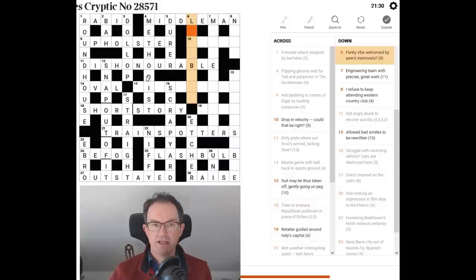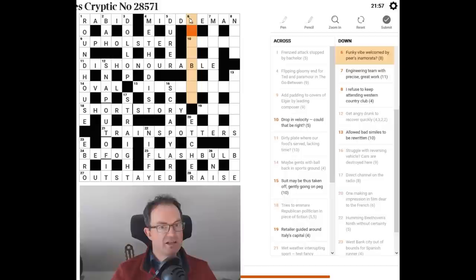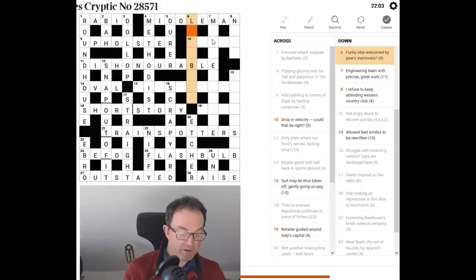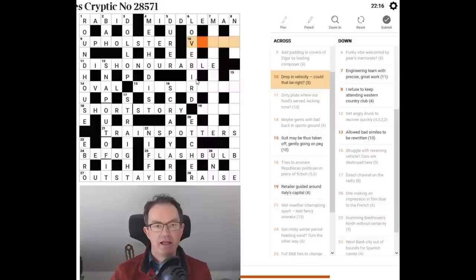Now let's go for this one, so funky vibe welcomed by Pia, Pia's probably a lord, in Amarata, oh lovebird, it is lovebird, okay so funky vibe, funky is telling us do an anagram of the word vibe, and we are welcoming that, so we're including it within a word for a Pia, and a Pia is a lord, a nobleman, so, and the way you get lord very quickly is we know that the answer begins with L, otherwise we'd be thinking earl or duke, so it must be lovebird, it's another, so we've got, we've had quite a bit of love in this top corner, haven't we, we've had the in Amarata, we've had the leman, we've had the paramour, and we've got the lovebird.